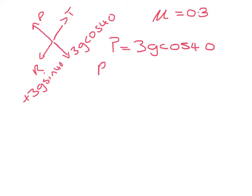And that my friction as R is mu P. So that's 0.3 times 3G cos 40, which equals 6.7565.